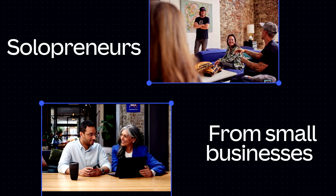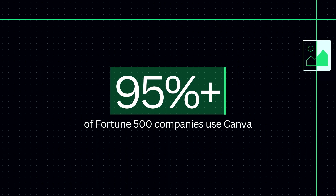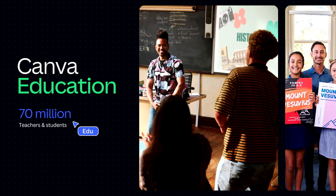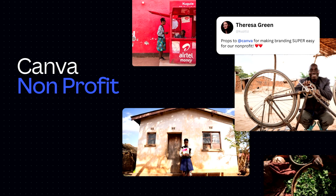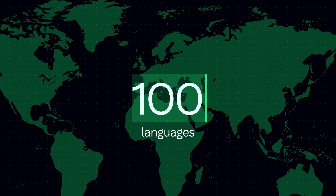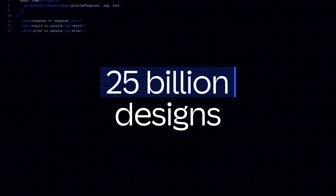A big part of the community are businesses, where Canva can reach everyone from solopreneurs through to small businesses. And as you heard earlier in the keynote, 95% of Fortune 500 companies. Another big part of our community is represented by those in the classroom. In fact, we have over 70 million teachers and students designing everything from lessons and book reports. And throughout the years, we welcomed more than 650,000 not-for-profit organizations onto the platform, giving away over a billion dollars in paid plan support to their causes. Canva is used across 190 countries, 100 different languages, and on every device possible. And since Canva launched back in 2013, over 25 billion designs have been created on the platform.